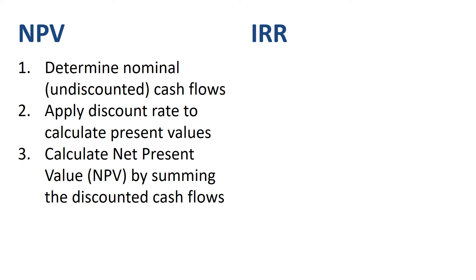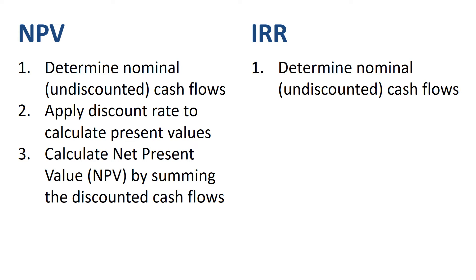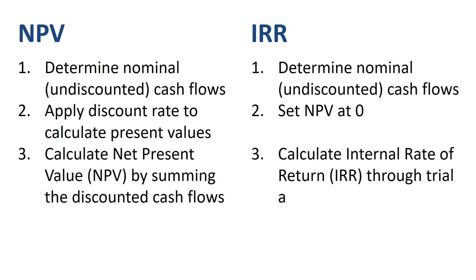IRR basically swaps steps 2 and 3. Just like in the NPV calculation, you start off quantifying the nominal cash flows over the years for your project. You then set the net present value in the formula at zero. You can now calculate IRR, which is the output variable or dependent variable.